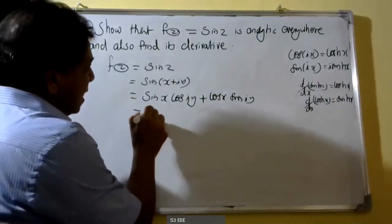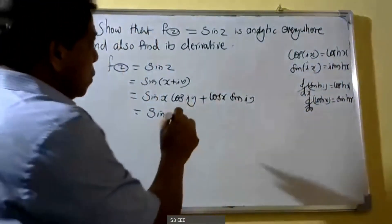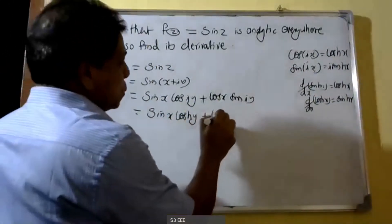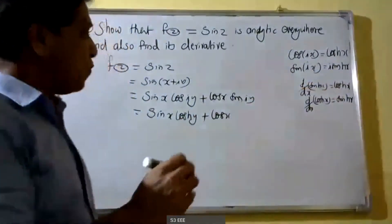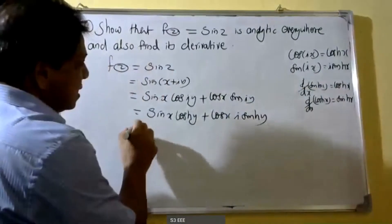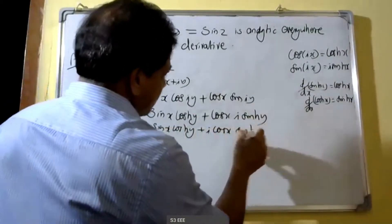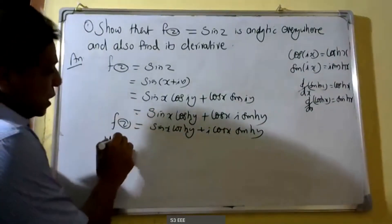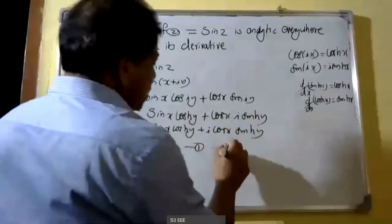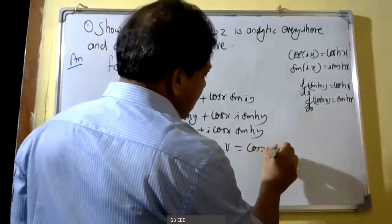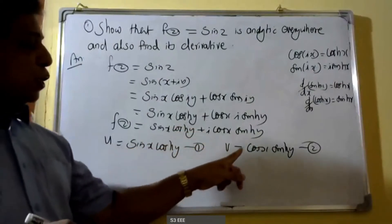This equals sin(x)·cos(iy). Using the formula cos(ix) = cosh(x), therefore cos(iy) = cosh(y). And cos(x)·sin(iy); using sin(ix) = i·sinh(x), therefore sin(iy) = i·sinh(y). So we get sin(x)·cosh(y) + i·cos(x)·sinh(y). Here the real part u = sin(x)·cosh(y) (equation 1) and the imaginary part v = cos(x)·sinh(y) (equation 2).